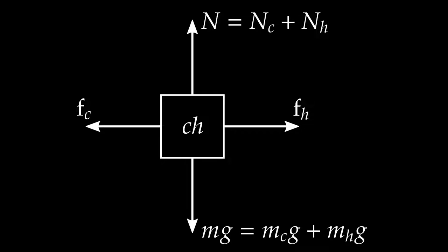Are there friction forces? In this situation there are two — one on each of the two individual free body diagrams I've drawn. It is absolutely okay to have multiple friction forces on one free body diagram. The friction force that retards the cart acts backward, and the friction force on the horse directed forward is what propels the whole works. I draw both on the combined cart-horse free body diagram.